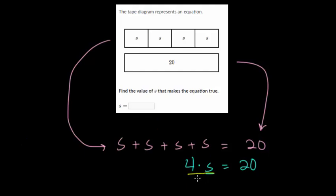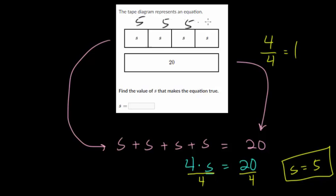We cancel multiplication by dividing—we do the opposite. We know that four divided by four is one, so these essentially cancel each other. So we get that one S, or S, is equal to 20 divided by four, which is five. Again, we can check this.